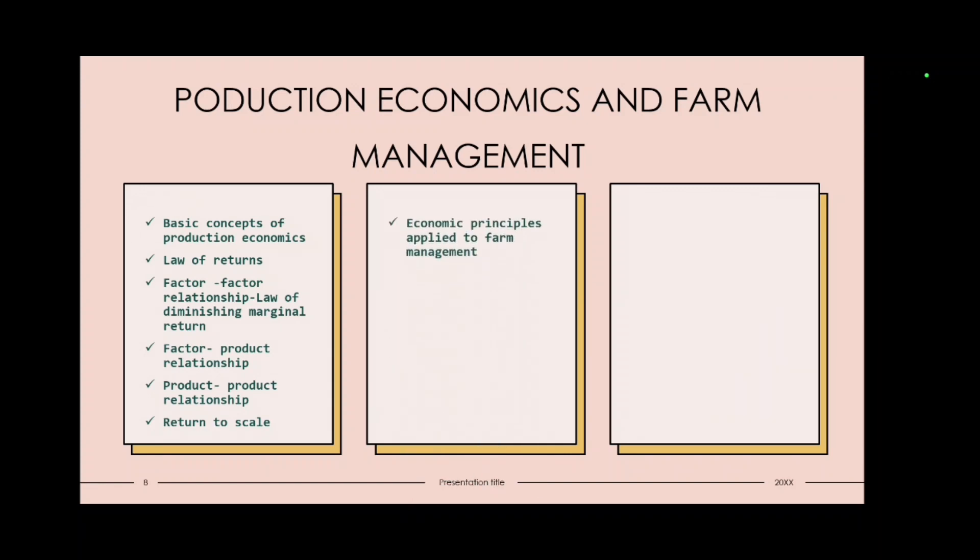Then comes farm management. Under farm management economic principles applied to farm management. Then comes types of farming. Types of farming system. Farm planning. Farm budgeting and types. Size of farm. Farm record. Farm inventory. Depreciation method of computation of depreciation. Then farm efficiency. Risk and uncertainty. In farm management basically you will have theoretical portion more. It's more about theory. So this was about farm management.